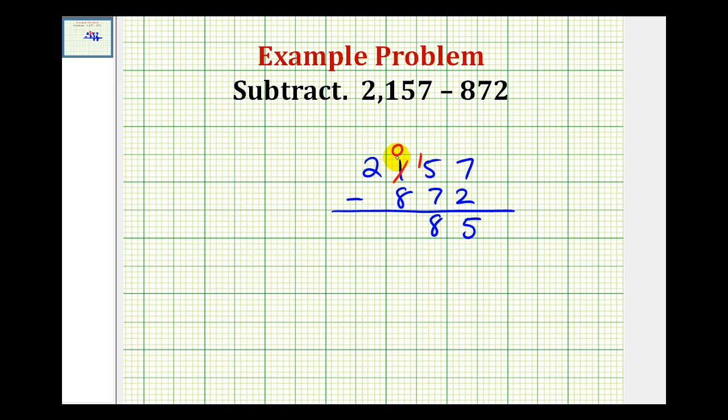Let's go ahead and borrow 1 from the thousands. This will change this to a 1. And then we add 10 to the hundreds, so this would be a 10. 10 minus 8 equals 2. And then we still have a 1 in the thousands place value. So the difference is 1,285.